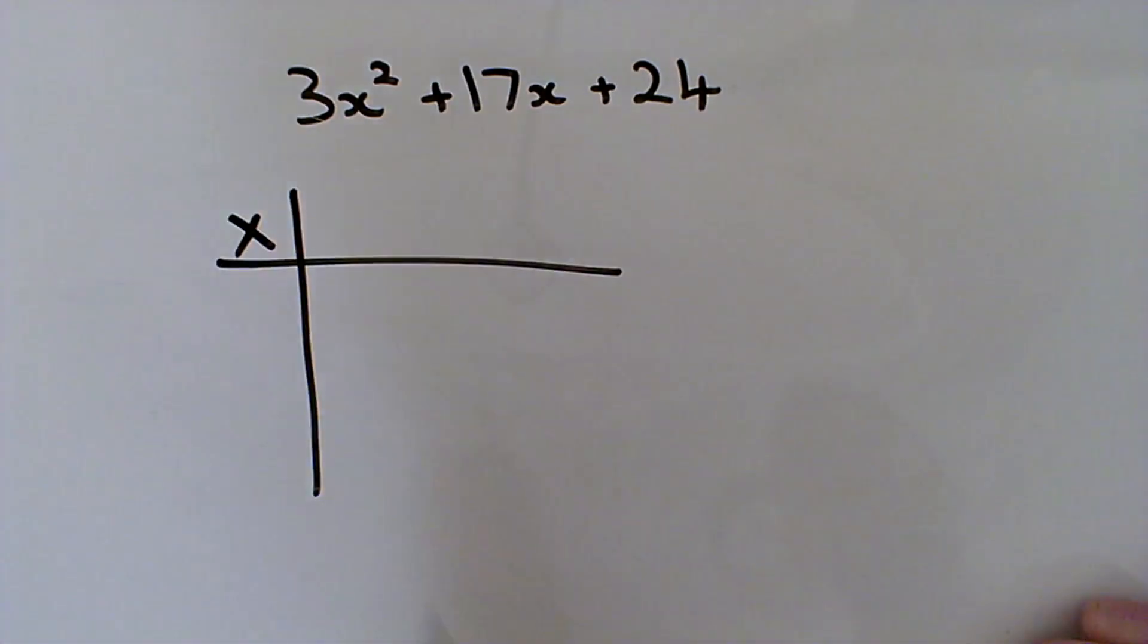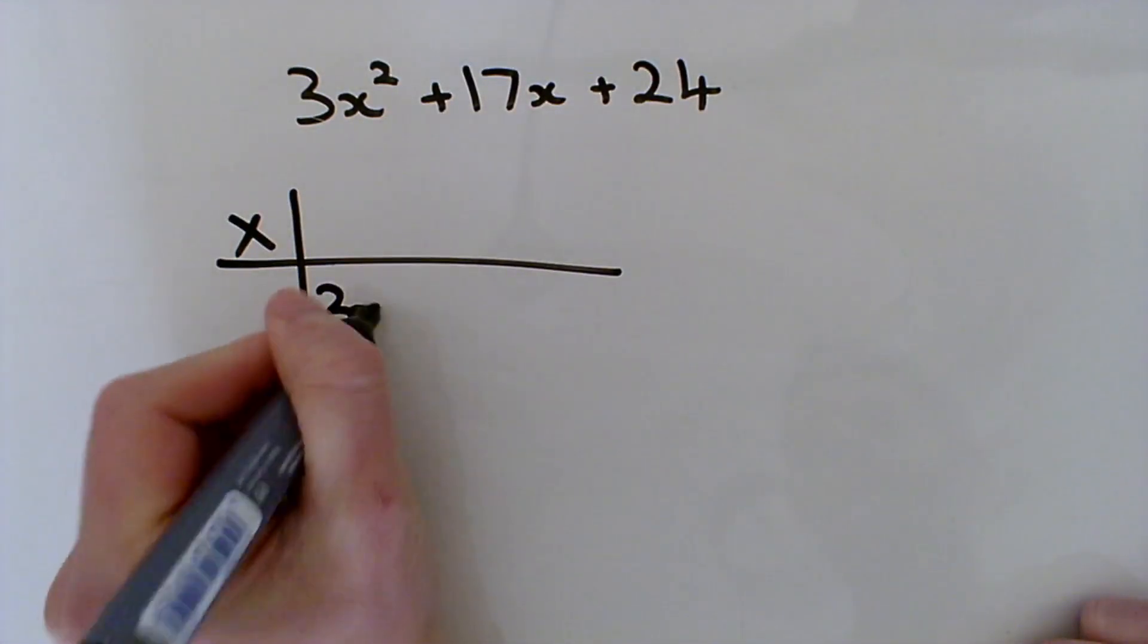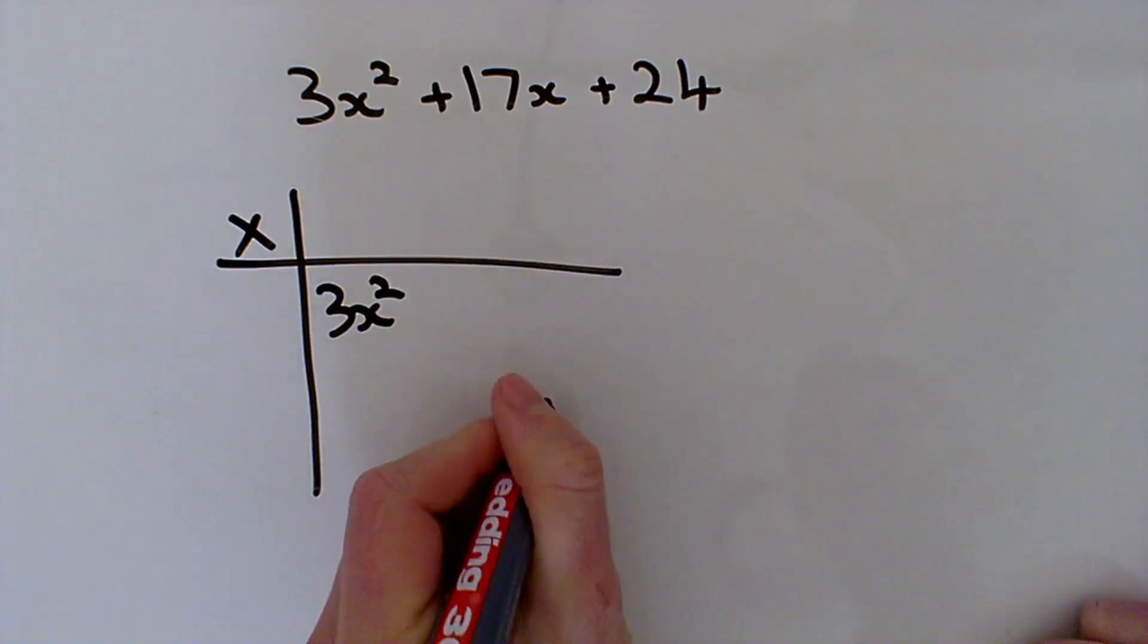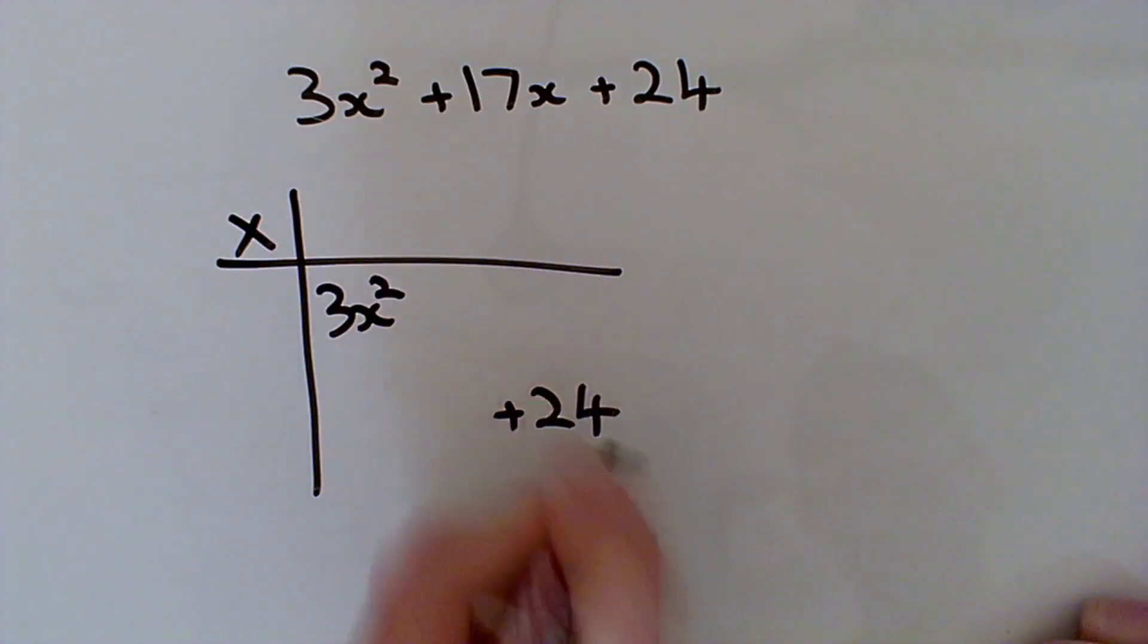So I've got this 3x squared here and I know that's going to have to go in the top, right? And my positive 24 is going to have to go down here.